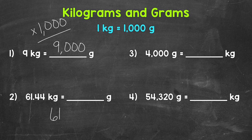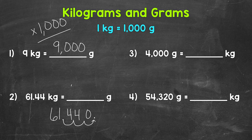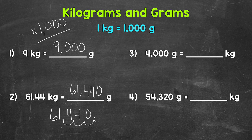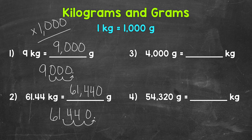Let me rewrite 61.44 here. We'll move the decimal once, twice, and three times to the right. Fill that gap with a zero, and that's our answer: sixty-one thousand four hundred forty grams. So 61.44 kilograms equals 61,440 grams. Let's check number one the same way — rewrite nine, and our decimal always comes after a whole number. Move it once, twice, and three times to the right, fill the gaps with zeros, and we get nine thousand as well.